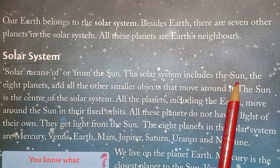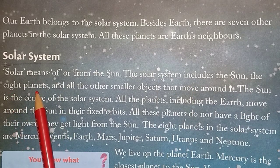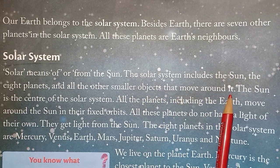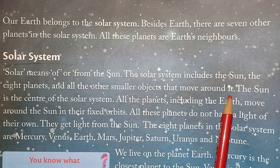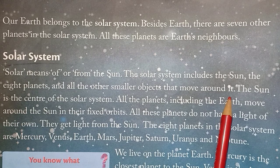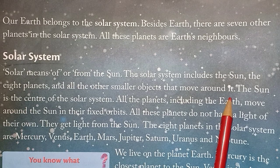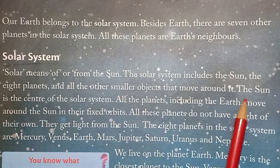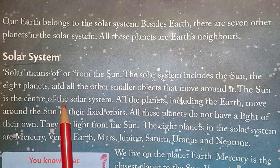The solar system includes the Sun, the eight planets, and all the other smaller objects that move around it. Just like our family has members such as mother, father, grandparents, uncle, aunt, and cousins, the Earth's family also has members: the Sun, eight planets including Earth, and other small objects moving around the Sun. This family of the Earth is known as the solar system.